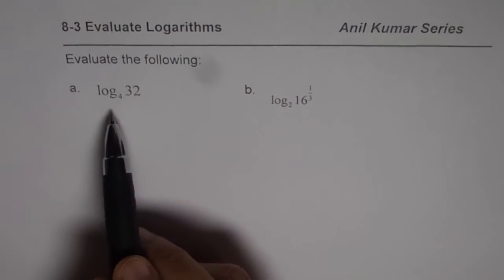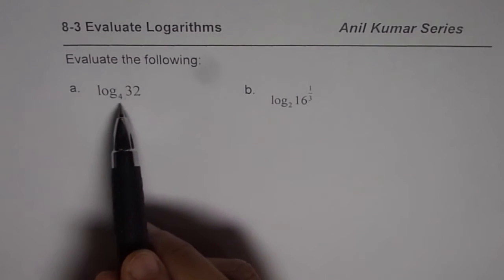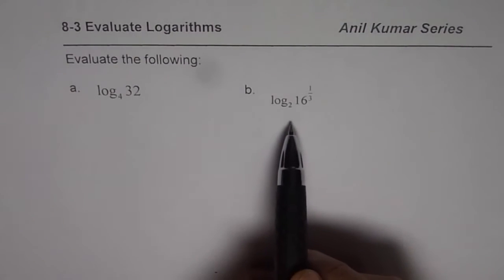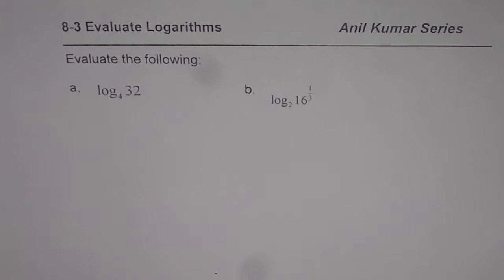The first one is log of 32 with the base 4, and the second one is log of 16 to the power of 1 over 3 to the base 2. How do we find their values?